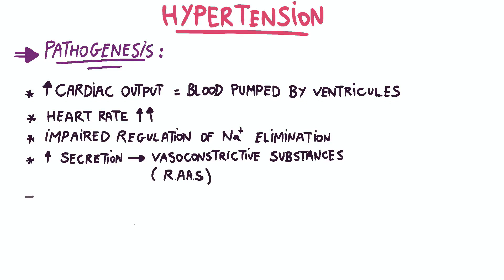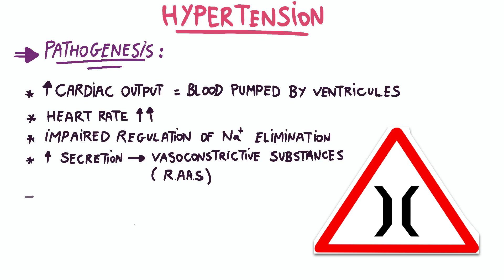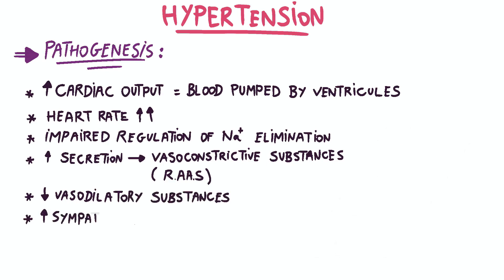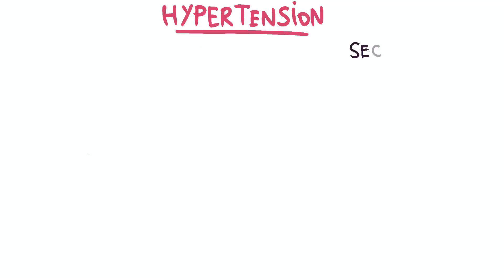The renin-angiotensin-aldosterone system can cause blood vessels to constrict, leading to increased resistance to blood flow and elevated blood pressure. Decreased secretion of vasodilatory substances, increased sympathetic activity, and structural abnormalities such as stiffening or narrowing of the arterioles also contribute to hypertension.